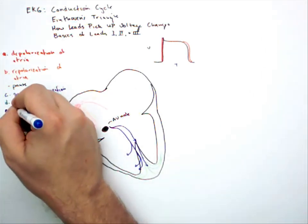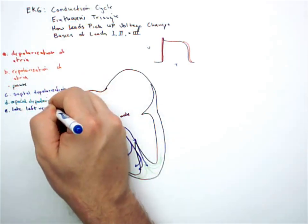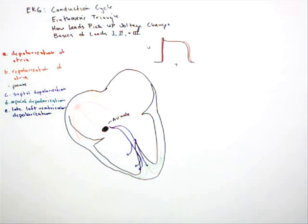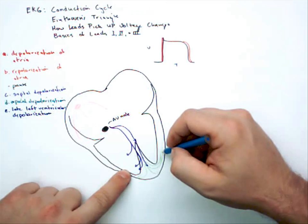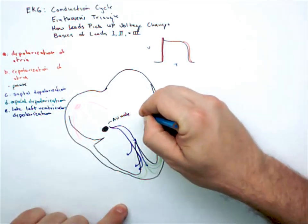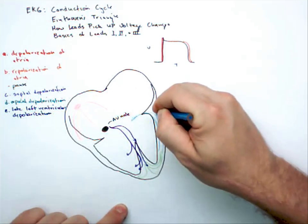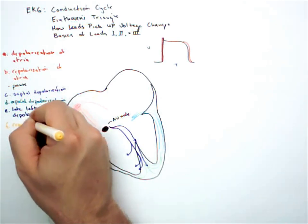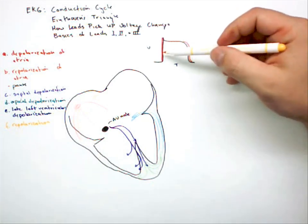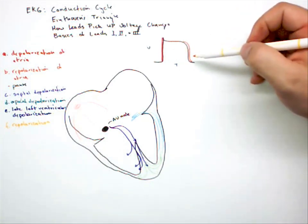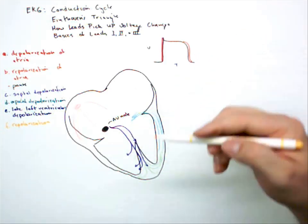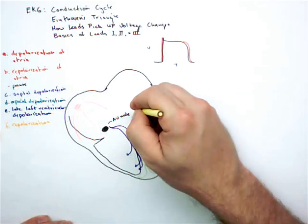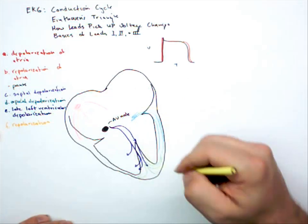The next step is called late left ventricular depolarization. At this point, most of the voltage has gone as far up the right ventricle as it's going to go, and now we're going to follow the current the rest of the way up the left. Our last step is repolarization. You might notice something different here: when we talked about the atria, we depolarize and repolarize right away. It doesn't work that way in the ventricles — you depolarize all of the muscle and then repolarize at the end, and then you reverse the path completely. Okay, so that's the conduction cycle.